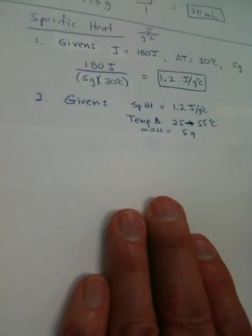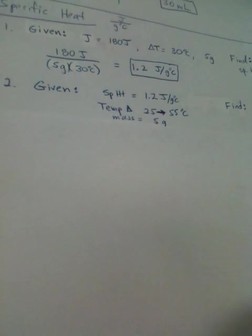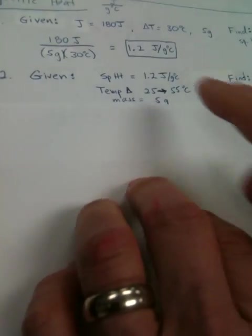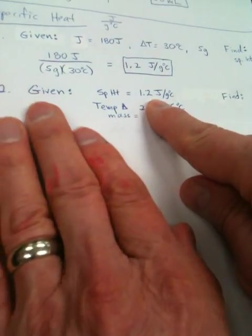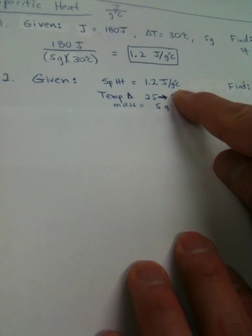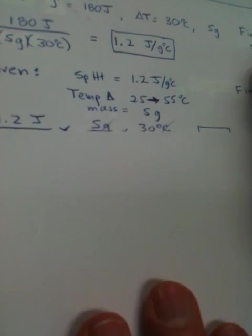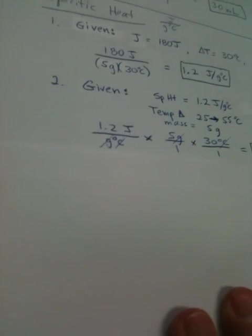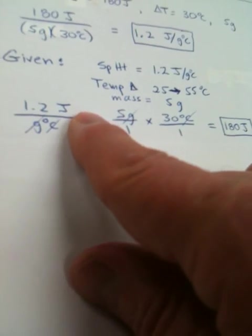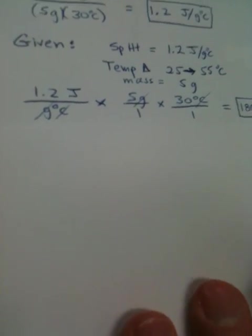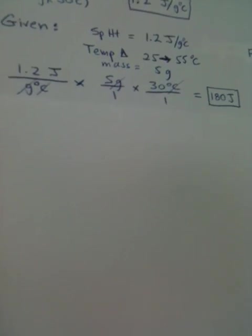Let's look at another problem. This time we're going to find joules. Hunter, what am I going to put on top? Is it going to be 1.2 joules or grams of degrees centigrade on the top? 1.2 joules. Because that's what we're trying to find. Our calculation winds up looking like this. We've got our 1.2 joules. This isn't quite as intimidating now because you've done those density problems.